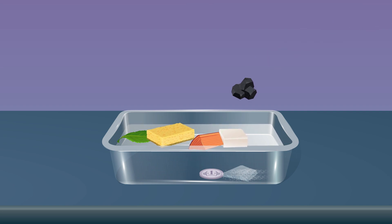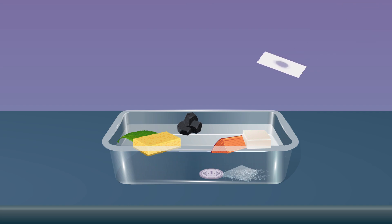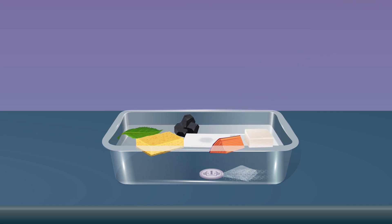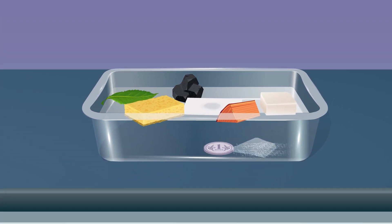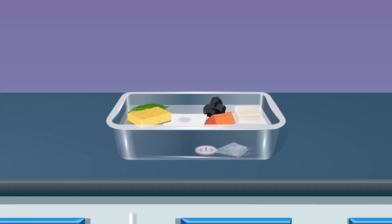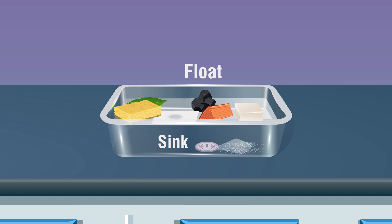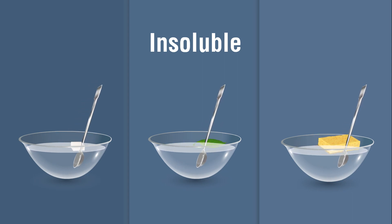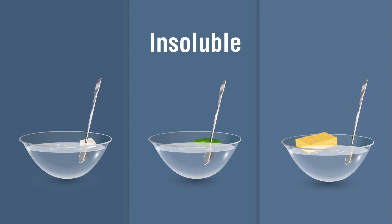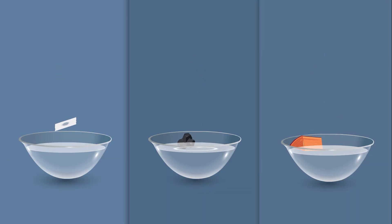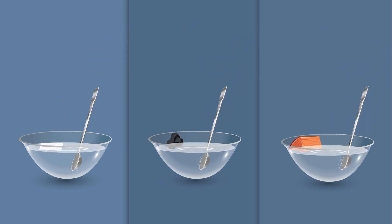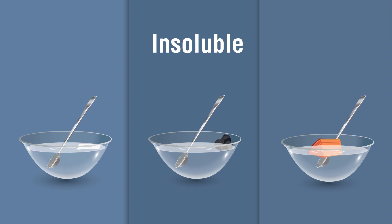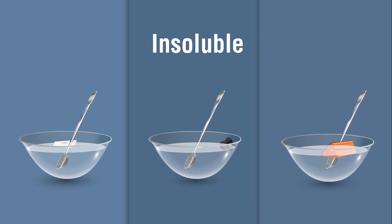Now let us check the solubility of these materials in water. Stir the given materials with a spoon or glass rod and check solubility. Observe that some substances have completely disappeared or dissolved in water. Materials which dissolved in water are called soluble materials, such as sugar. Materials which did not dissolve in water after stirring for a long time are called insoluble materials.